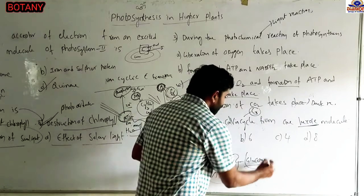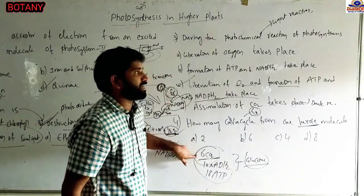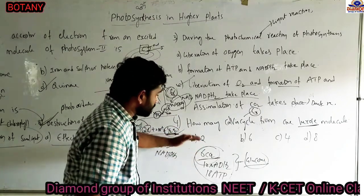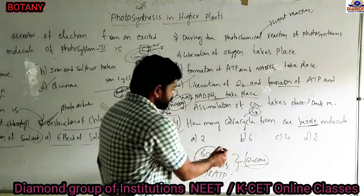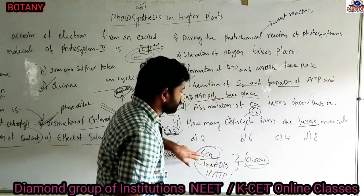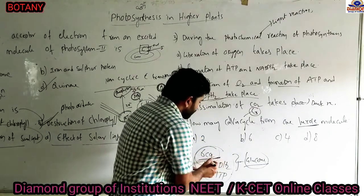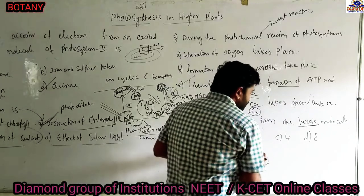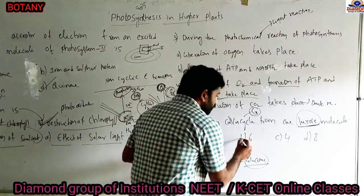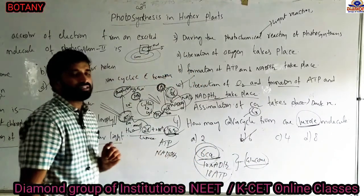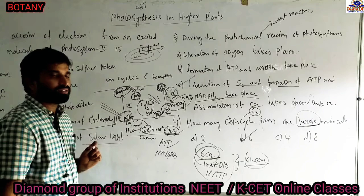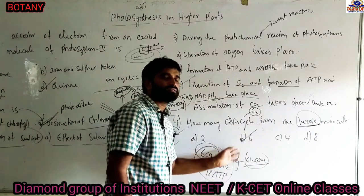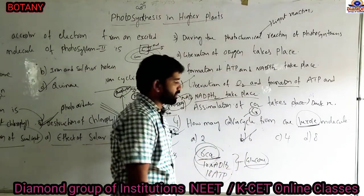For the synthesis of one glucose molecule, six CO2 molecules are required. Each CO2 molecule is fixed by specialized enzymes with specialized reactants. For the synthesis of one glucose or hexose molecule, the C3 cycle rotates six times. By rotating six times — one CO2 molecule per cycle — one glucose molecule is synthesized. So the answer is six times.